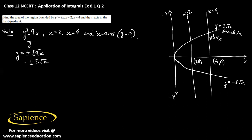Here it is asked that we find the area only in the first quadrant. So we need to find the area of only this region. Let's say the area of this region is A square units.